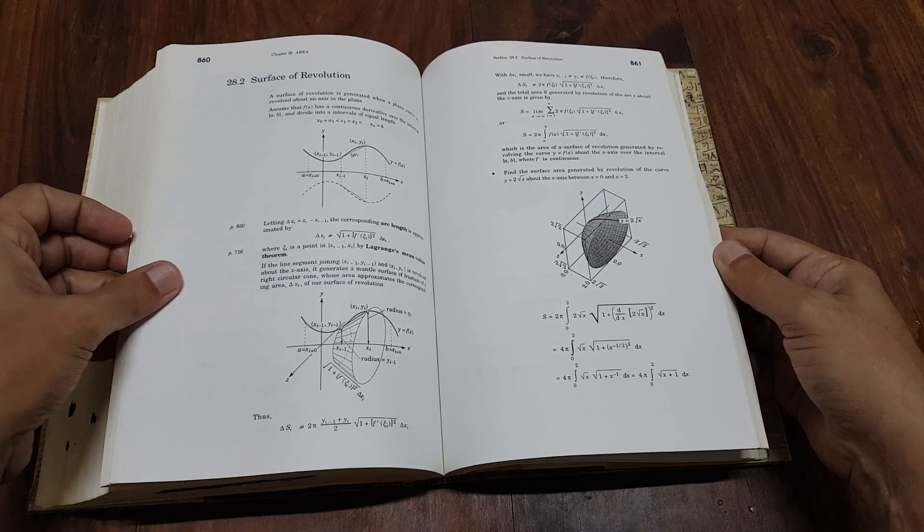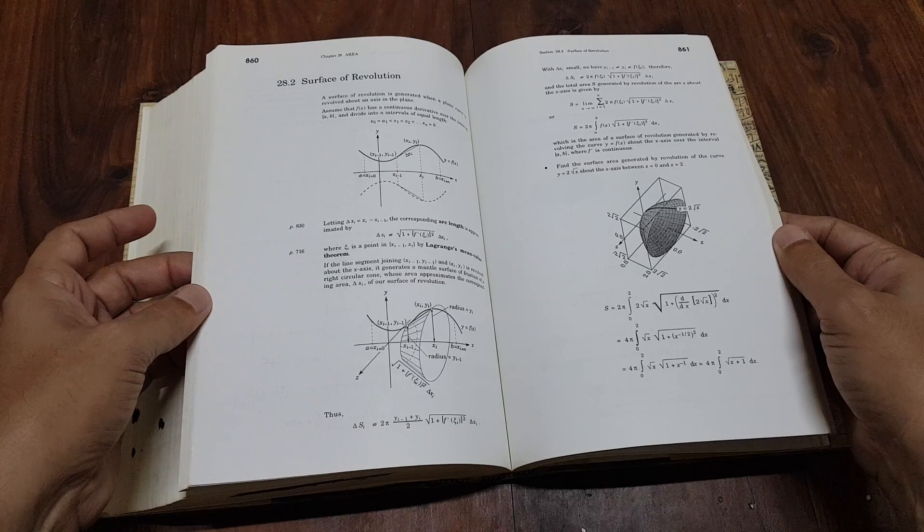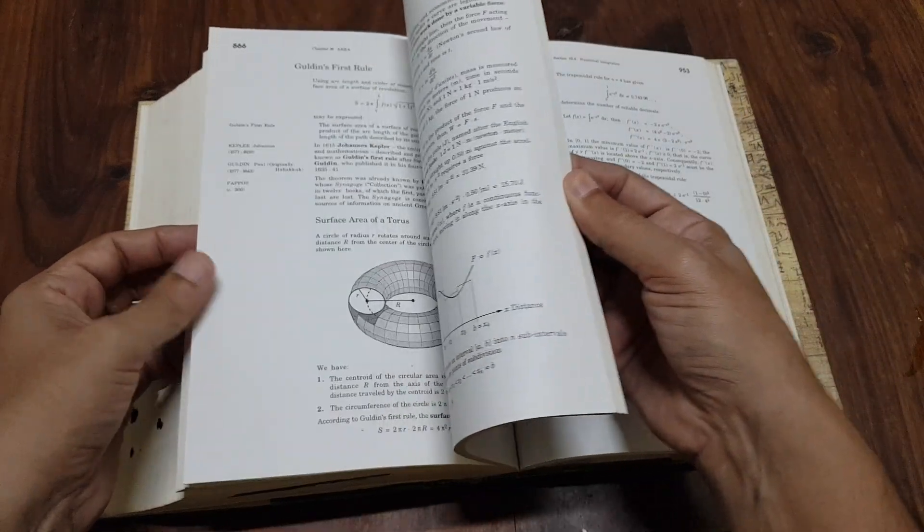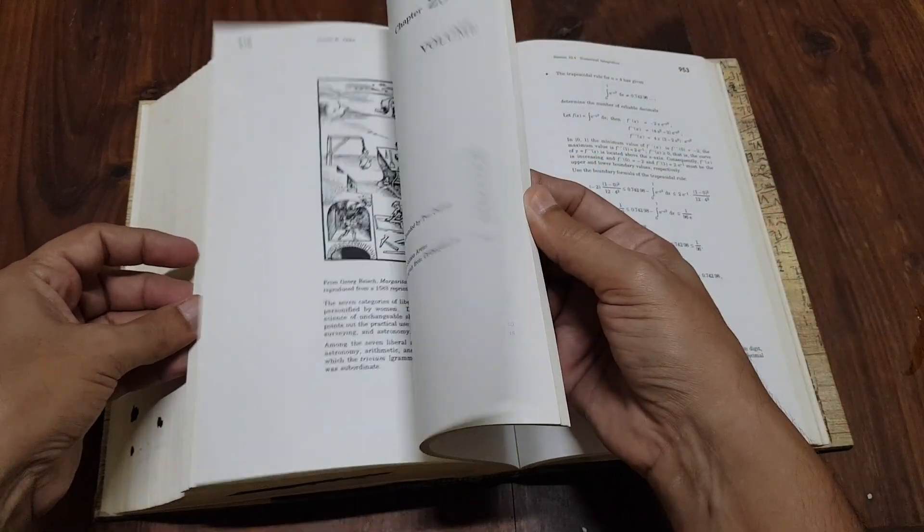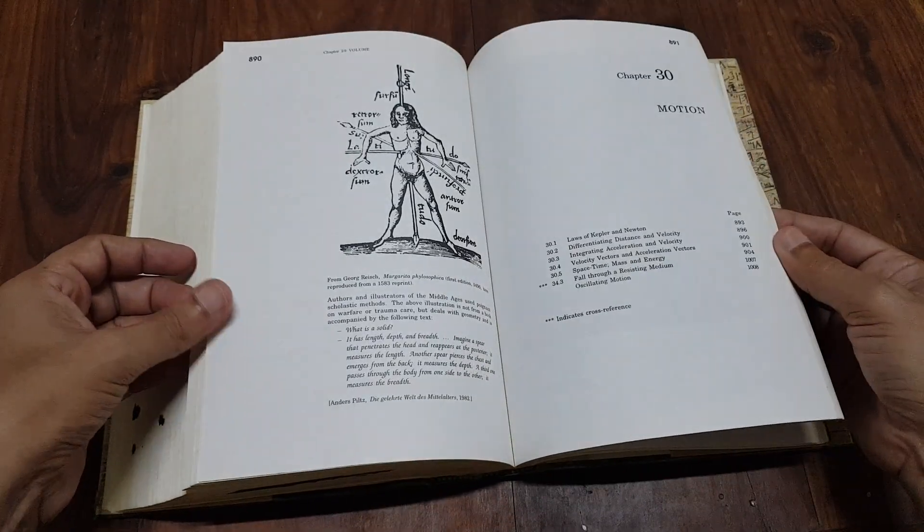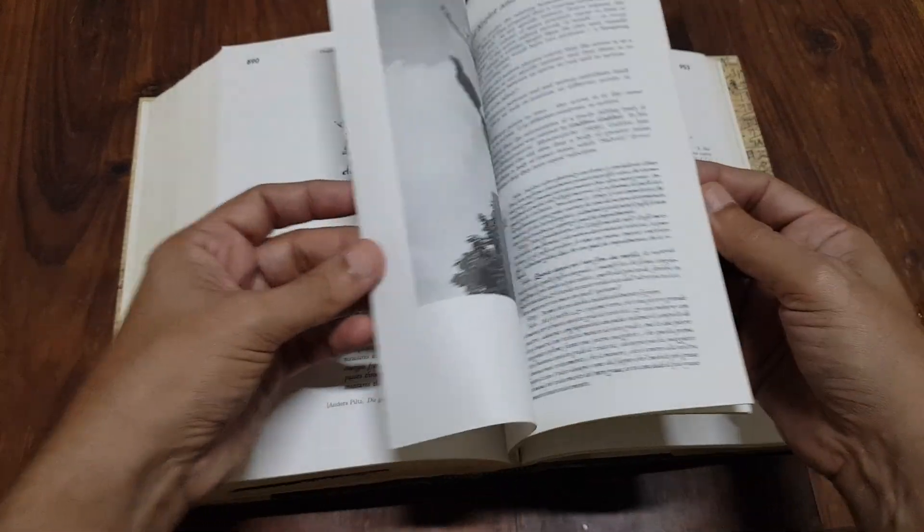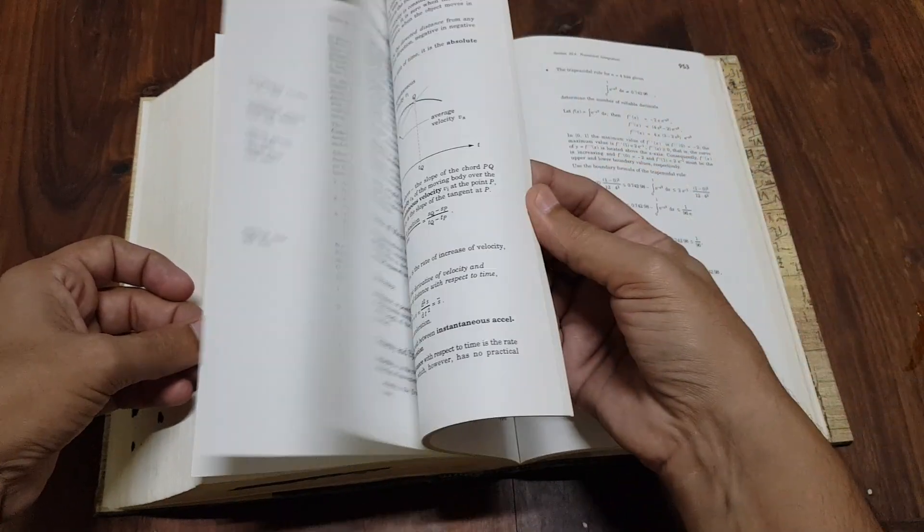Conclusion. Mathematics: From the Birth of Numbers is a monumental work that serves as both an introduction and a deep dive into the world of mathematics. Its comprehensive nature and accessible style make it a valuable resource for anyone interested in understanding the history and development of mathematical ideas.